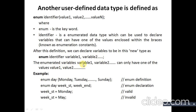After this definition we can declare a variable as: enum identifier variable1, variable2, ...; The enumerated variables can only hold one of the listed values. For example: 'enum day { Monday, Tuesday, ..., Sunday };' is the enum definition. Then 'enum day week_st, week_end;' is the declaration, where week_st means starting week day and week_end means end week day. Assigning Monday to week_st is valid because Monday is part of day, but assigning May is invalid because May is not part of the day enum.